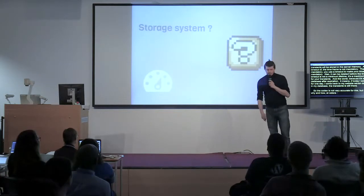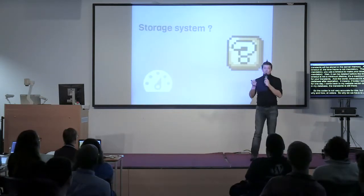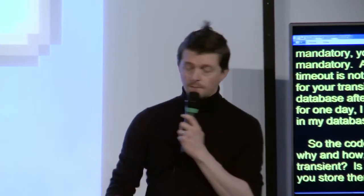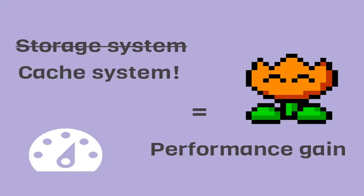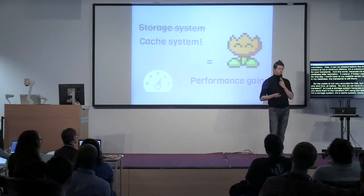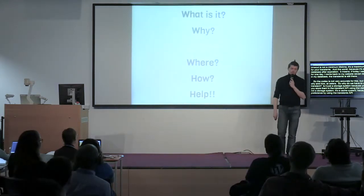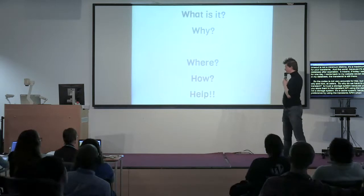So, why do we have to use transients? Is it a storage system? Because you get data and store them in transients using the Transients API in the database. But it's not a storage system - it's a cache system. Because you will gain performance by using the Transients API from WordPress. We will see quickly when we can use transients.